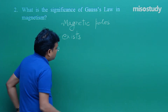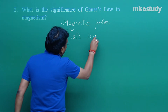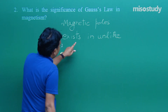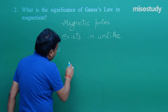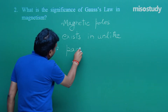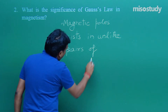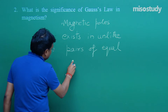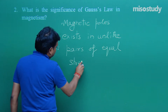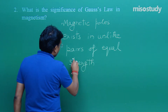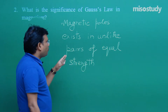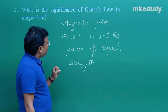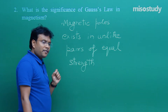Magnetic poles exist in unlike pairs of equal strength. This is the answer for question number 2. Now the question in mind is: what is the meaning of this statement — magnetic poles exist in unlike pairs of equal strength?